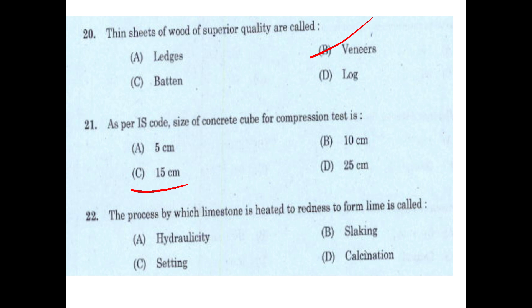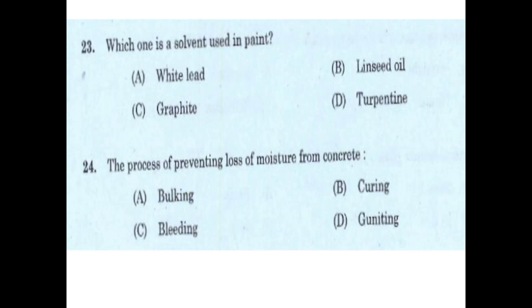The process by which limestone is heated to readiness to form lime — options are: hydraulicity, slaking, setting, calcination. The answer is option D, calcination.